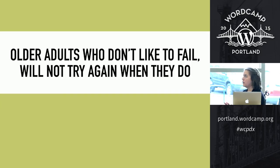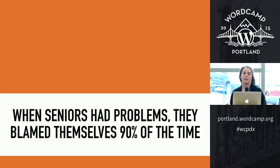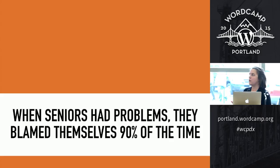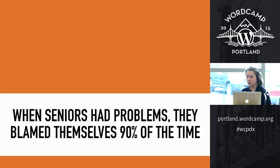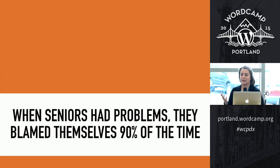Older adults who don't like to fail will not try again when they do, which is no good. My two-year-old fails all the time and keeps trying, but when my grandmother fails, she won't try again. So for older adults especially, it's really important that our designs enable success. And this one just breaks my heart: when seniors fail — and this is from 2004 — they blamed themselves 90% of the time. That's horrible. When we're talking about usability, the problem is always on us, the designers. If there is a usability problem, that is our fault. When we have a population of people who think they can't use the site because they're dumb or old, that is not okay.